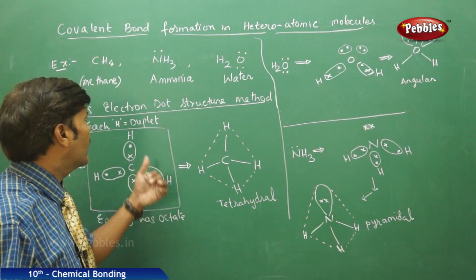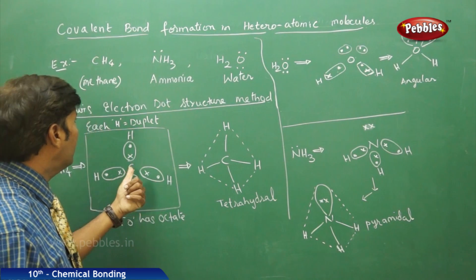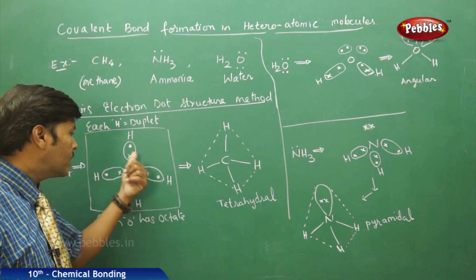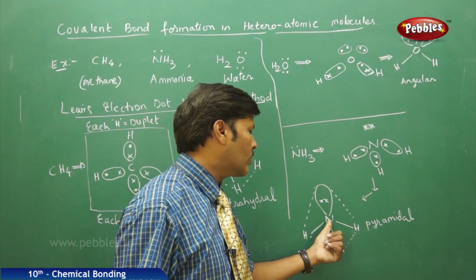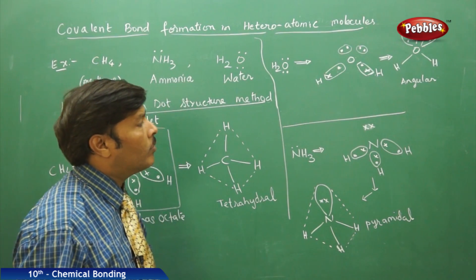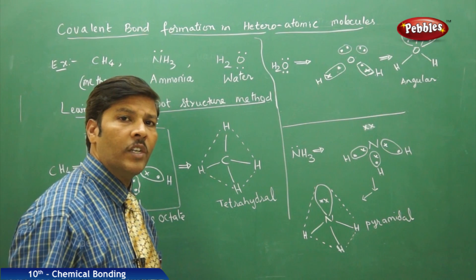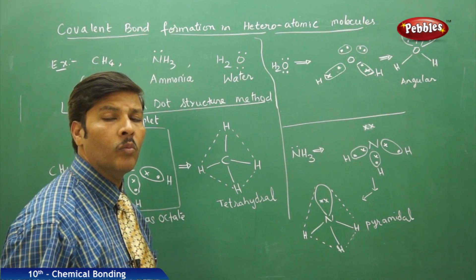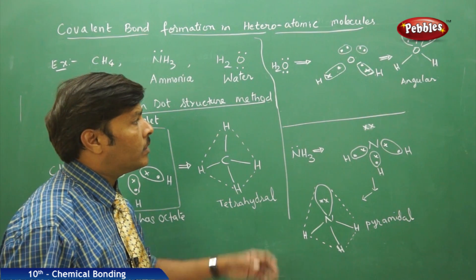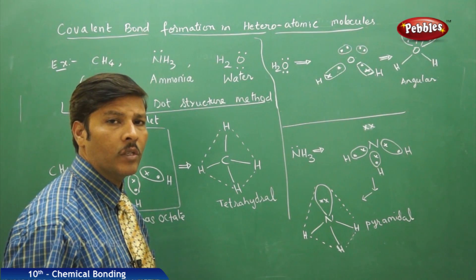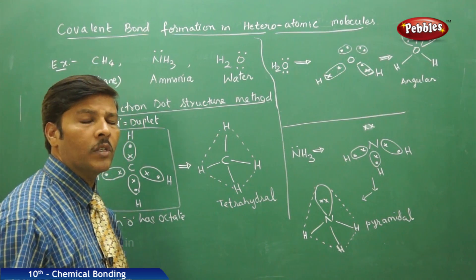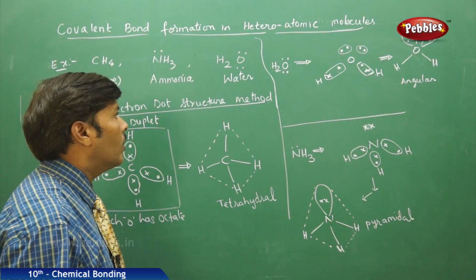In methane, the central atom carbon achieves octet stability and the adjacent hydrogen atoms achieve duplet stability. Similarly in ammonia, the central atom nitrogen achieves octet stability while the hydrogens achieve duplet stability. In water, the central atom oxygen achieves octet stability with two bond pairs and two lone pairs, and both hydrogens achieve duplet stability. In this way, we understand covalent bond formation in both homodiatomic and heteroatomic molecules.